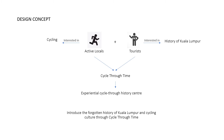Now I'm going to explain about my design concept. I'm trying to tackle two target users: the active locals that are interested in cycling activities, as there are existing cycling tracks around the site, and also the tourists who visit the site frequently as it is surrounded by landmarks and they are more interested in the history of Kuala Lumpur. So I decided to combine these two points to form Cycle Through Time, which is an experiential Cycle Through History Centre that aims to introduce the forgotten history of Kuala Lumpur and also cycling culture.